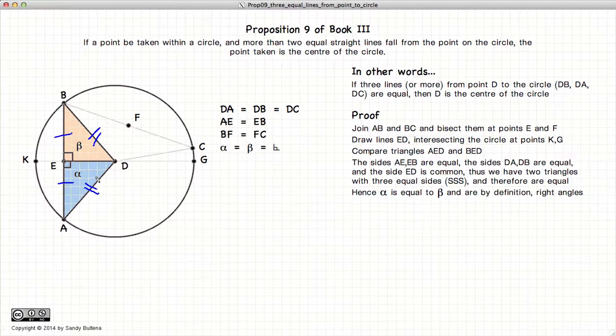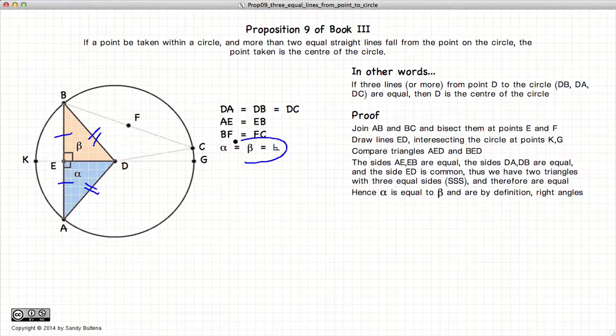which means that they are equal in all respects, which means that alpha is equal to beta. And if we have a straight line with another line intersecting it, by definition, if alpha and beta are equal, alpha and beta are right angles. So ED is perpendicular to AB.